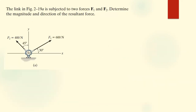The next example says: the link in the figure is subjected to two forces F1 and F2 — determine the magnitude and direction of the resultant force. To solve this, we first find the components of each force and then use those components to find the resultant. We'll continue with the same link after a short break.